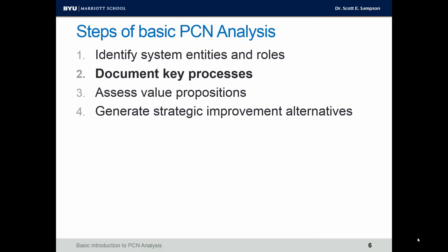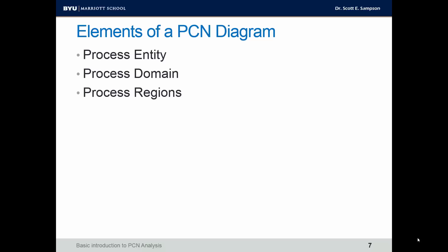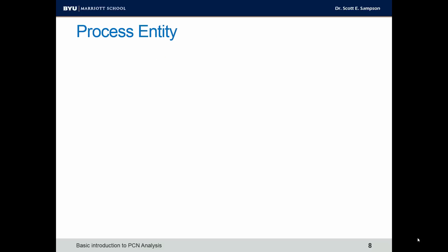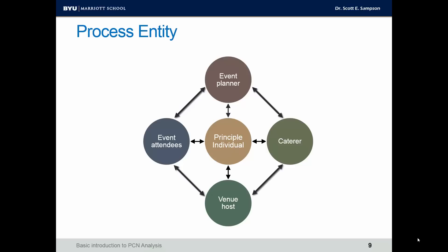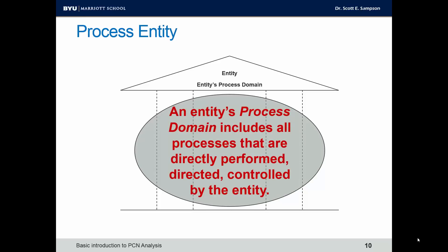Number two: document key processes. The tool we're going to use as part of PCN analysis is a PCN diagram. There are some basic elements of a PCN diagram: a process entity, a process domain, and process regions. A process entity is any entity that may influence or make decisions about process steps, control process steps. For Malawi's, we're going to look at the caterer as the process entity to first focus on.